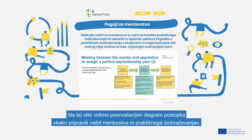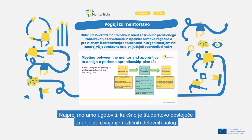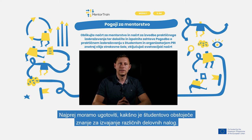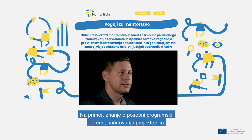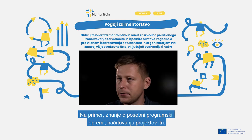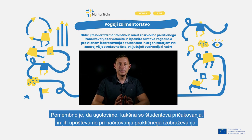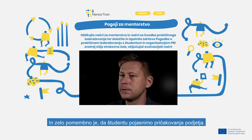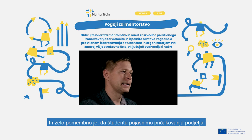On this picture we see a simplified process diagram of how to design a mentoring and apprenticeship plan. Firstly, we must find out how much knowledge the apprentice already has to perform different work tasks, like knowledge about special software, planning projects, etc. It's important to find out the expectations of the apprentice and use that for planning the apprenticeship, and it's very important to explain the expectations of the company to the apprentice too.